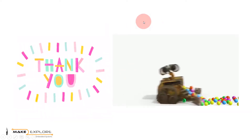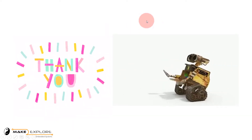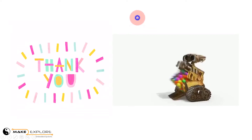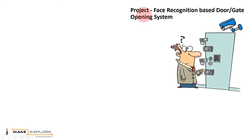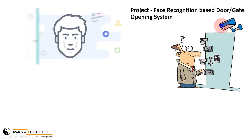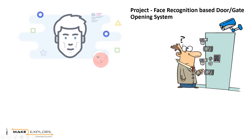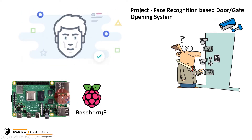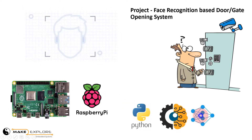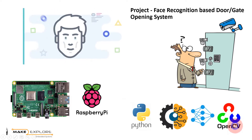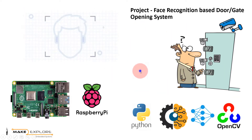Hello everyone, welcome to Make2Explore channel. First of all, thank you to all our subscribers, viewers, and supporters. In this session, we are going to see a new project: Face Recognition Based Gate or Door Entry System. This system will open the gate only when an authorized person is detected on camera. We will use Raspberry Pi for the development board, Python programming, deep learning techniques, and different computer vision libraries. So without any delays, let's get started.